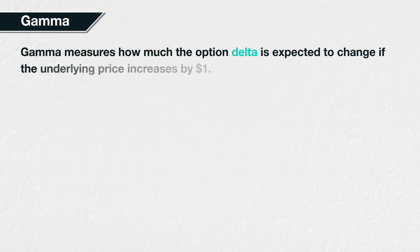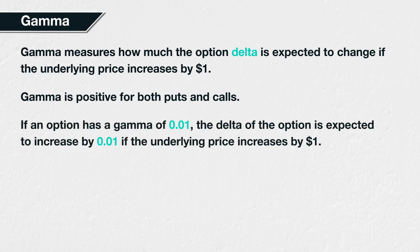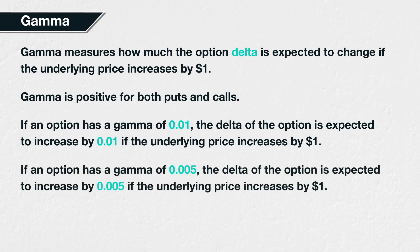Gamma is a measure of the sensitivity of an option's delta to changes in the underlying price — specifically, how much the delta is expected to change if the underlying price increases by $1. Gamma is also the only second-order Greek we will be covering today. It is second-order because it measures the sensitivity of a first-order Greek to changes in a parameter, rather than the sensitivity of the option price itself. Gamma is positive for both puts and calls. If an option has a gamma of 0.01, the delta is expected to increase by 0.01 if the underlying price increases by $1. If an option has a gamma of 0.005, the delta is expected to increase by 0.005 if the underlying price increases by $1.